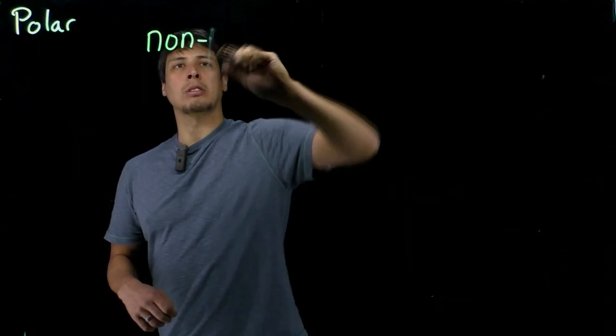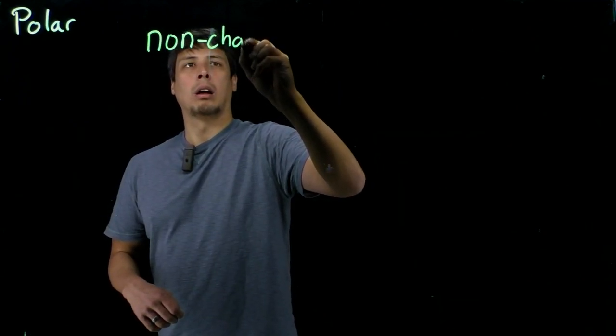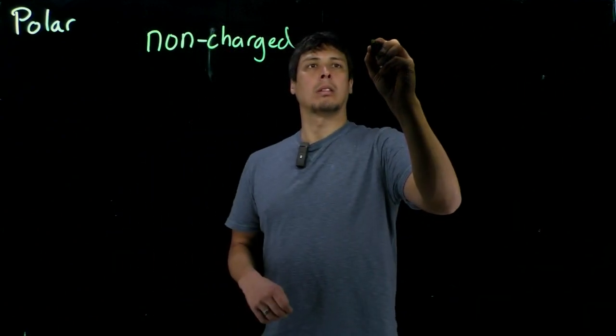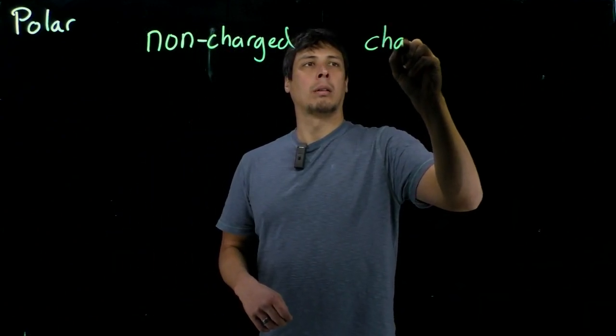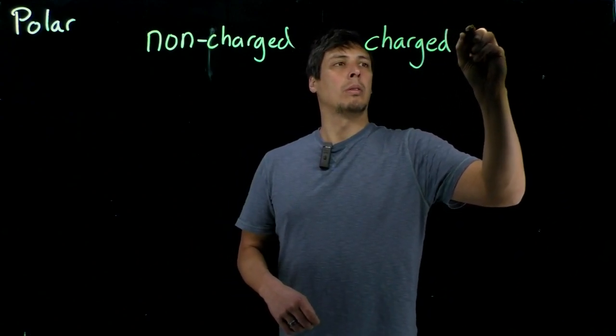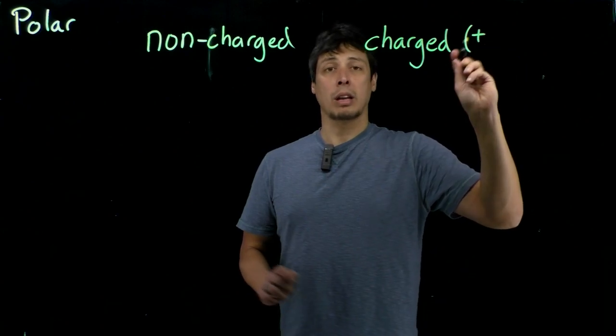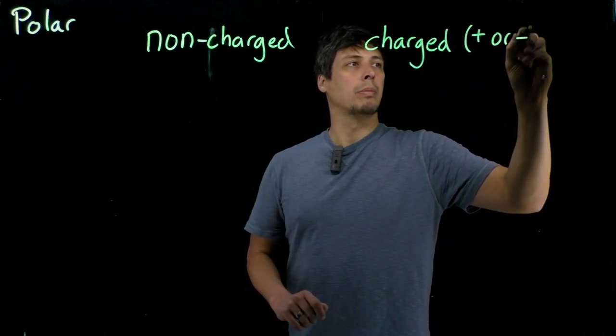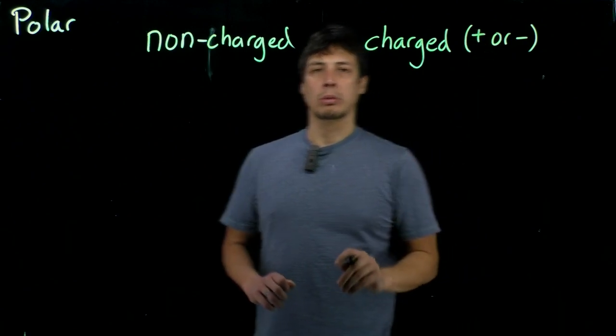So there are non-charged polar amino acids and there are charged polar amino acids. So the charge means we can carry on the side chain some sort of plus or minus charge on them. And that's going to depend on the functional groups that are on these.